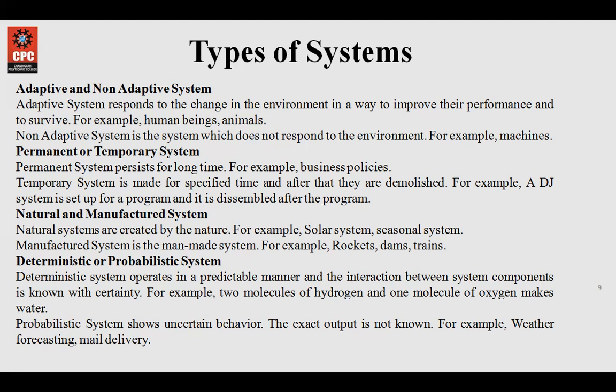Then comes natural and manufactured systems. Natural systems are those not made by human beings — they are already existing in the universe. Examples are the solar system and the seasonal system. Manufactured systems may include your transaction processing system or ERP system.